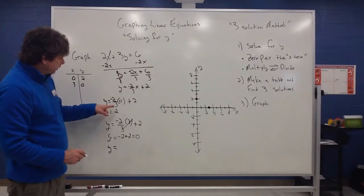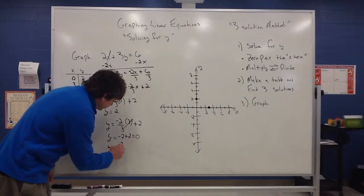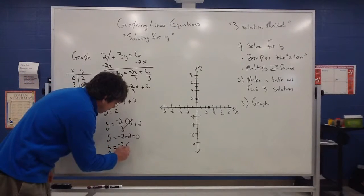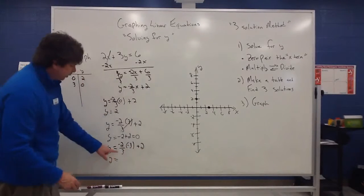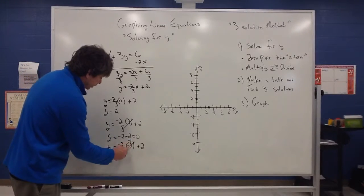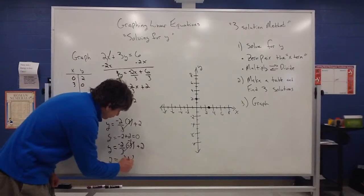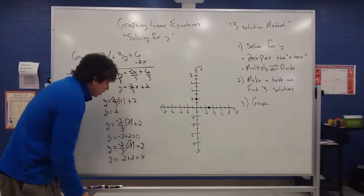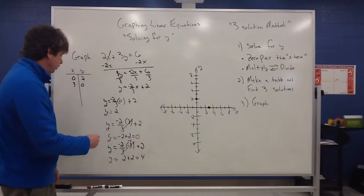Another value for x that I can choose, since I have a three there, it's not a bad idea to just use a negative three. So I have negative 2 thirds times a negative three and add a two. And we know that three is going to go into negative three and give me a negative one. Negative two times negative one is going to be a positive two. And two plus two is going to give me a positive four there.